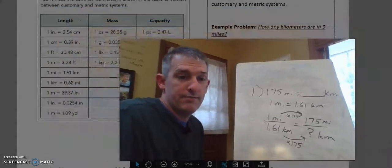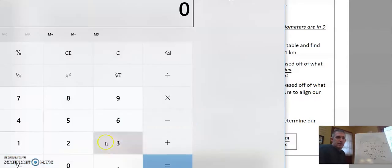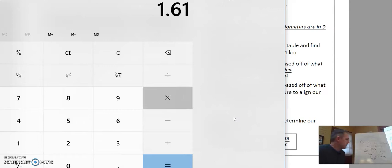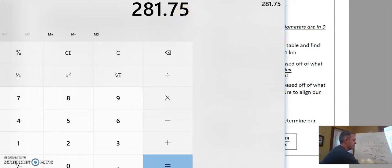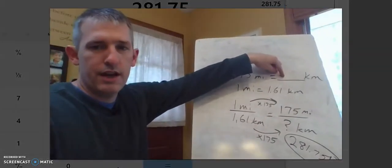Let's go to the calculator. So 1.61 times 175. And here's my answer. Instructions were round to the nearest hundredth if need be. I don't need to because this gives me the answer exactly to the hundredths place. So 281 and 75 hundredths kilometers is my answer. That would tell me what goes in this blank right here. That's really all that I need to do in this problem.